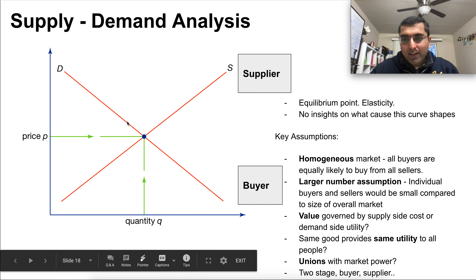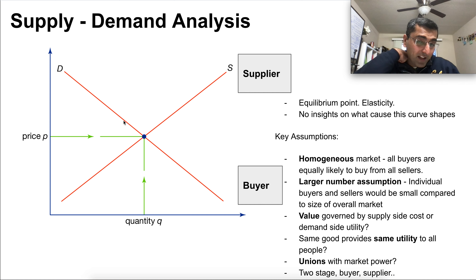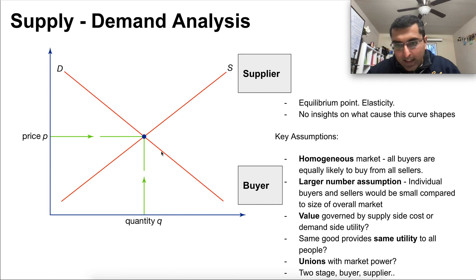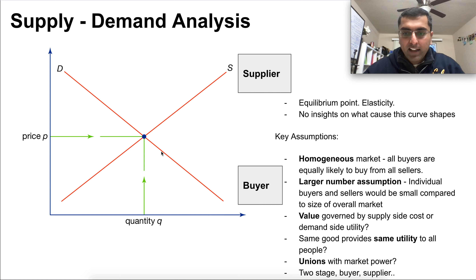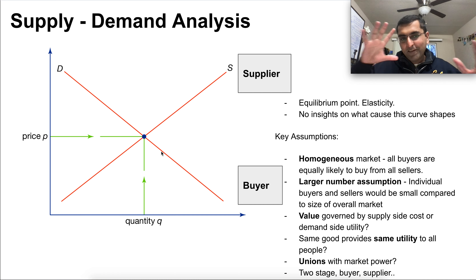The third assumption concerns who governs value. Is it supply-side driven — meaning if the price goes down enough people will buy — or is it utility driven, meaning after a certain point people won't buy more, like clothes? Supply-demand analysis doesn't give you that perspective. But it does give you two big concepts: who is a supplier, who is a buyer, and what price maximizes profits.